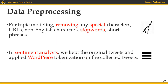To give more details about the preprocessing steps considered before feeding tweets to the different models: for the first task of topic modeling, preprocessing focused on cleaning tweets by removing special characters, URLs, non-English characters, stop words, and short phrases — words with fewer than two characters.